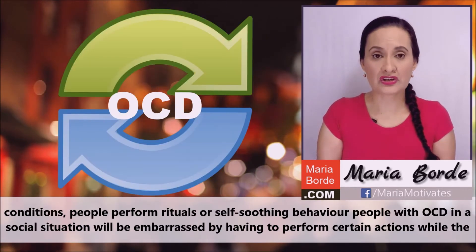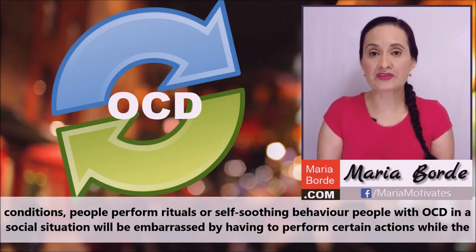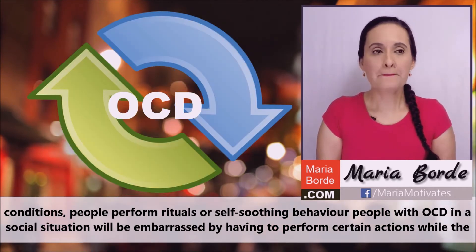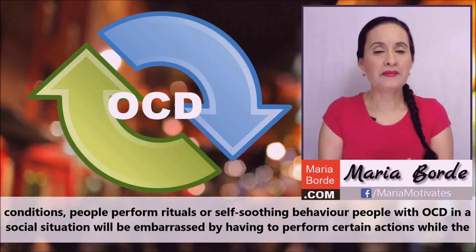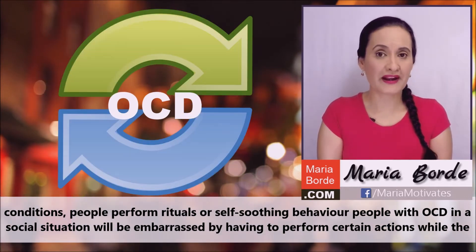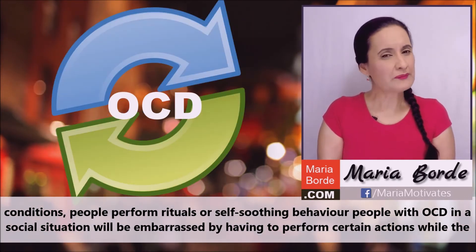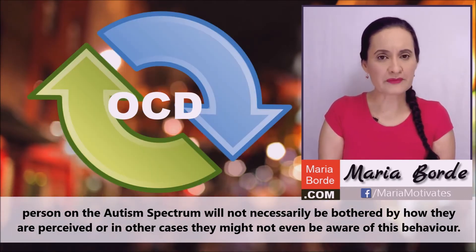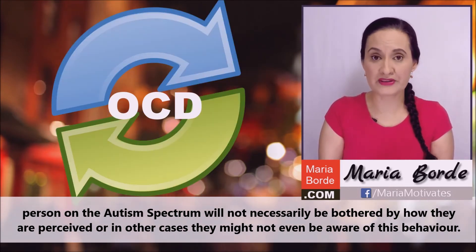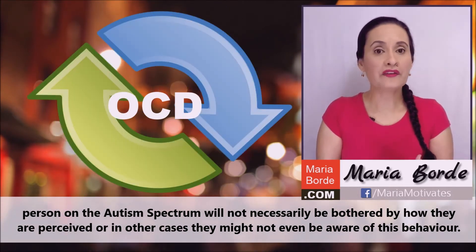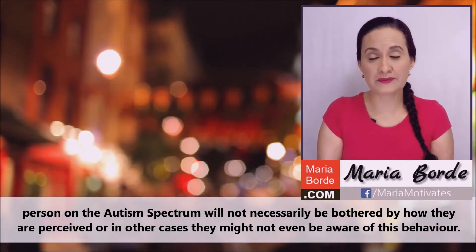Even though in both conditions people perform rituals or self-soothing behavior, people with OCD in a social situation will be embarrassed by having to perform certain actions, while the person on the autism spectrum will not necessarily be bothered by how they are perceived, or in other cases they might not even be aware of this behavior.